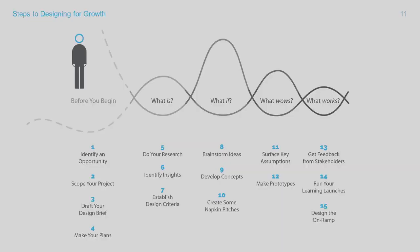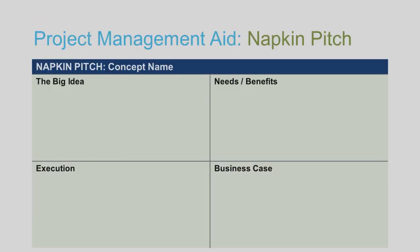So now we're ready to begin asking the question What is, and figure out what it takes to do the research — step number five — identify insights in step six, and establish design criteria in step seven. We then look at how we move into What if and brainstorming to achieve a napkin pitch. We will capture our new ideas in the form of a napkin pitch, which is exactly what it sounds like — it's a quick, high-level summary of an idea that you could fit on a napkin if you needed to. And remember that we want a portfolio of napkin pitches, not just one.